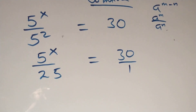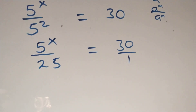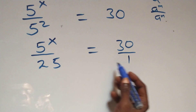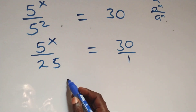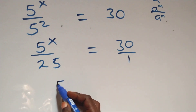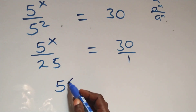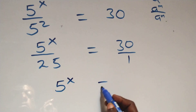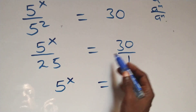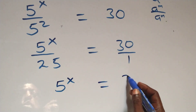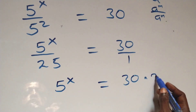The next step here, we cross multiply. That is, 5 raised to power x times 1 — that's the same thing as 5 raised to power x — then equals to 30 times 25.